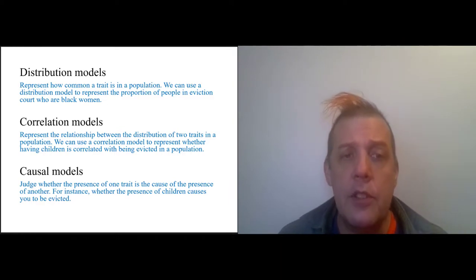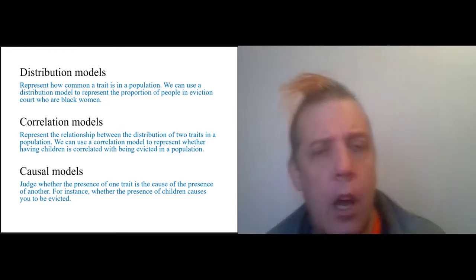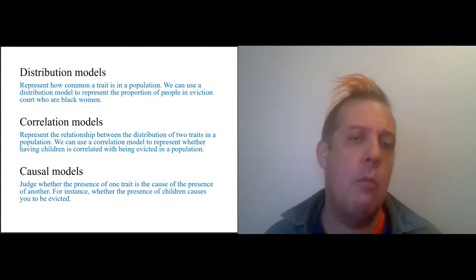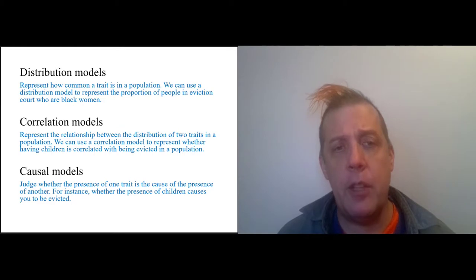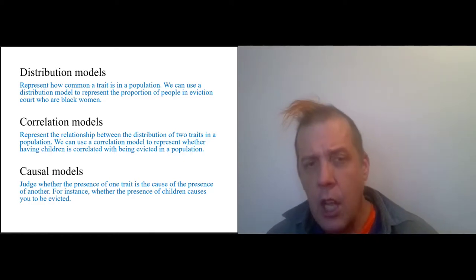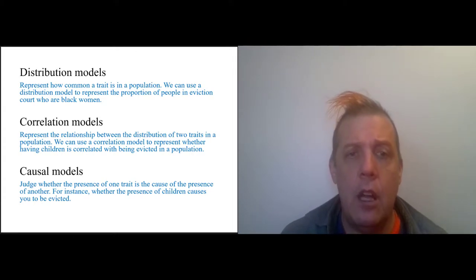Correlation models give a relationship between two distributions. So we find that families with children are more likely to be evicted than families without children. So there's two distributions: the number of families with children and the number of families experiencing eviction. And we find that if you have a child in your family, you are more likely to be evicted. Notice that this does not indicate, on its own, causation, although already while you were thinking about children and landlords...